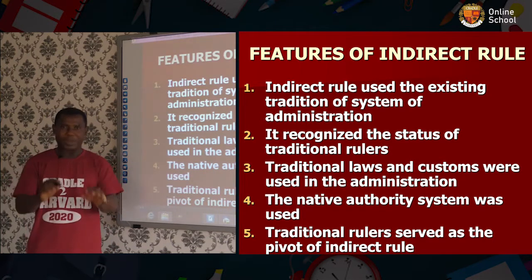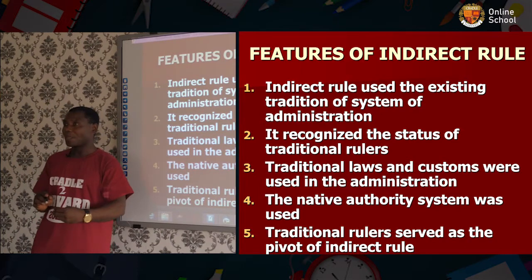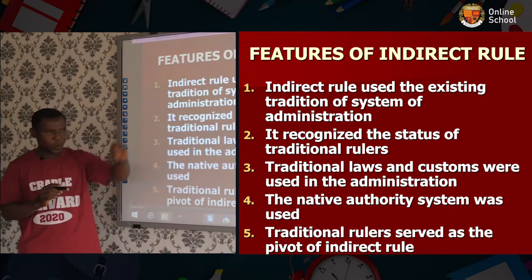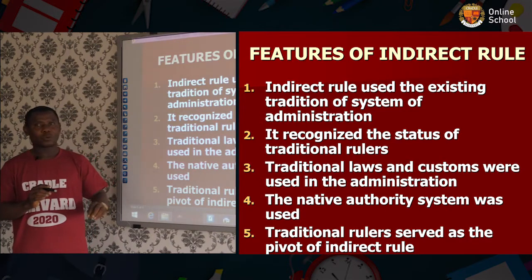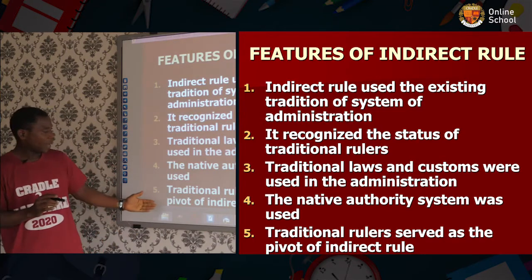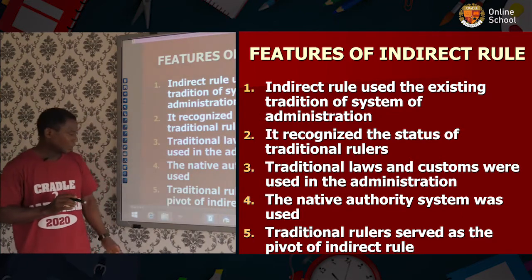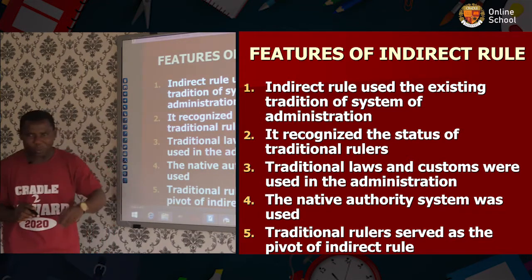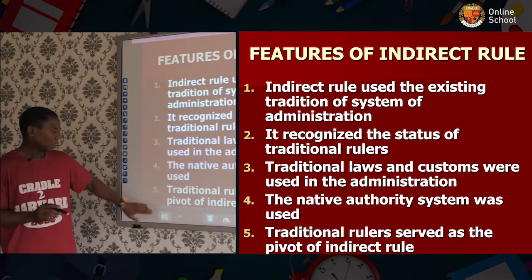As I mentioned, in the northern administration they had an organized system — a native way of administration. That native authority was what the British made use of; they couldn't change anything. Feature five: traditional rulers served as the agents of indirect rule. They were the ones who carried out the indirect rule on behalf of the British government.